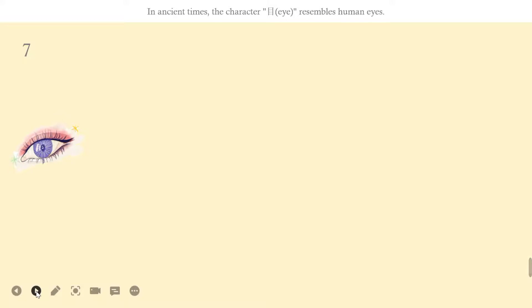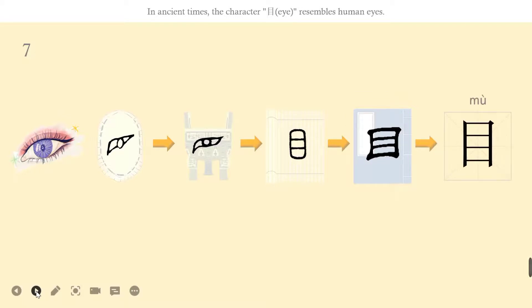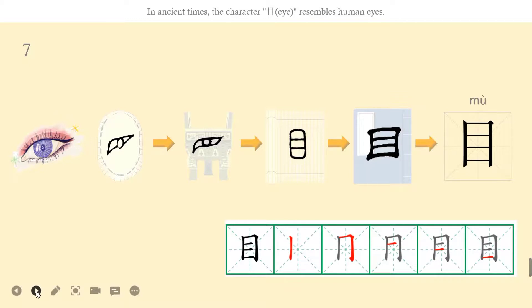Let's learn the seventh character, mù. It's quite easy to guess what's the meaning of mù. In ancient times, the character mù resembles human eyes. Let's learn how to write.